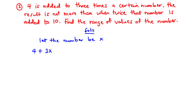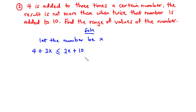The result is not more than a certain value. 'Not more than' means less than or equal to — for example, if Kofi is not more than 20 years, it means he is 20 years or less. So the inequality is 3x + 4 is less than or equal to 2x + 10. This is our linear inequality and we can now solve for x.